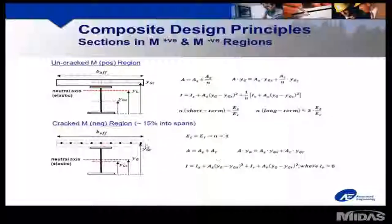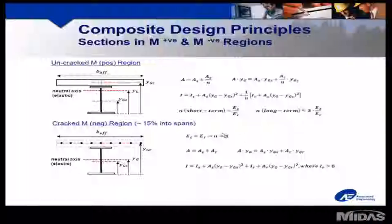This effective slab width is then used to calculate the total composite section properties, converting the concrete area to an equivalent steel area with the modular ratio N, which is the ratio of the Young's modulus of steel to that of concrete. For sustained loads, creep occurs requiring the long-term modular ratio of three times that of the short-term modular ratio. Please note the difference in the neutral axis of the composite section from that when the concrete is uncracked to that when it is cracked over the piers. The neutral axis goes further down, and cracking typically occurs around 15% into each span.